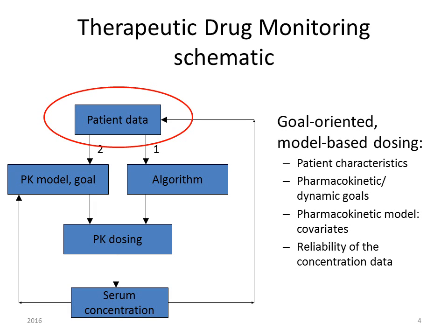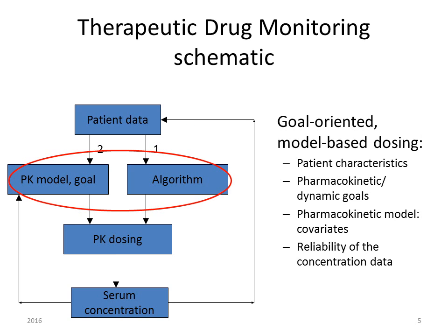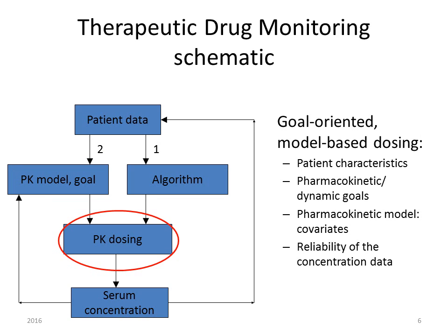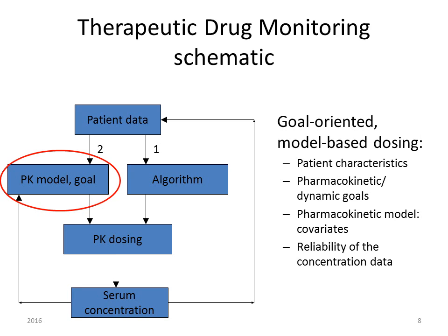Here you see it schematically. You start with your patient data. You have your pharmacokinetic model, your therapeutic goals, and your dosing algorithm. Then you calculate your first dose to start with. Then you draw your blood samples and measure your serum concentrations. You add these data to your pharmacokinetic model and with your therapeutic goals you recalculate the dose to further individualize the dose for your patient.